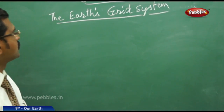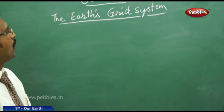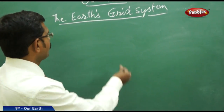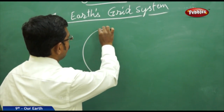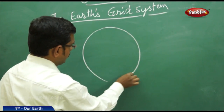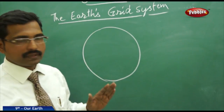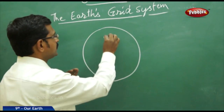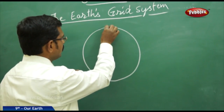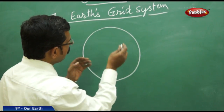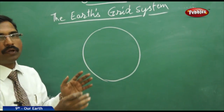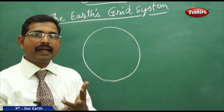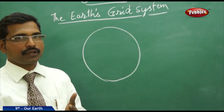Students, we will now discuss the Earth's grid system. We all know what a grid is. To understand it, grids are imaginary lines. If we talk about the Earth's grid system, we have to talk about latitudes and longitudes.